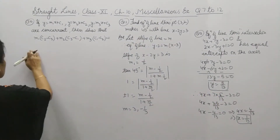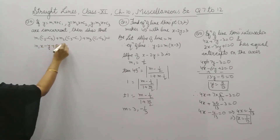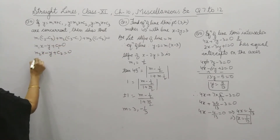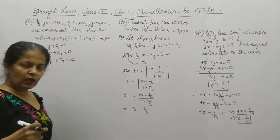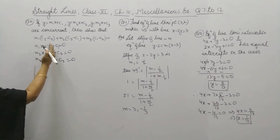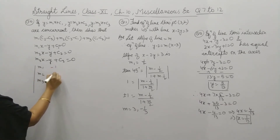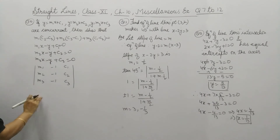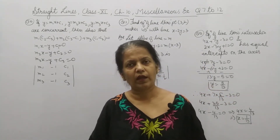The shortcut way to do this question is a method from your 12th class. You will shift all terms to one side: M1x - y + C1 = 0, M2x - y + C2 = 0, and M3x - y + C3 = 0. The next step is to write the coefficients of x, y, and all constant terms — M1, M2, M3 for x; -1, -1, -1 for y; and C1, C2, C3 as constants.